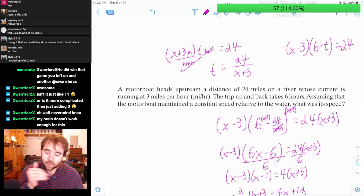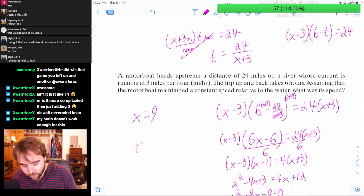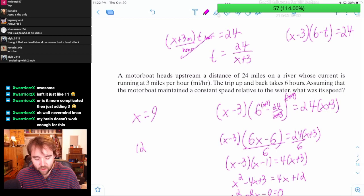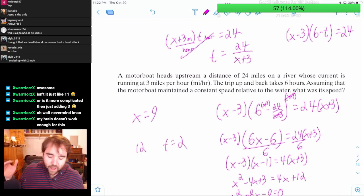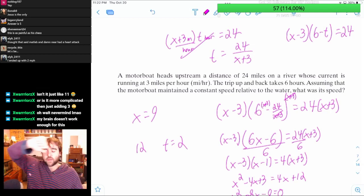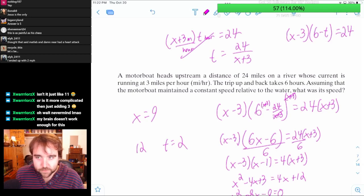Let's maybe check it. So we got X equals 9. What is it then? We're going 12 miles an hour the first time because we're adding. So if we're going 12 miles an hour for 24 miles, that means we're going 2 hours when we're going with the current. And then when we're going against the current, we're going 6 miles an hour, which means it's going to take 4 hours. Yep.